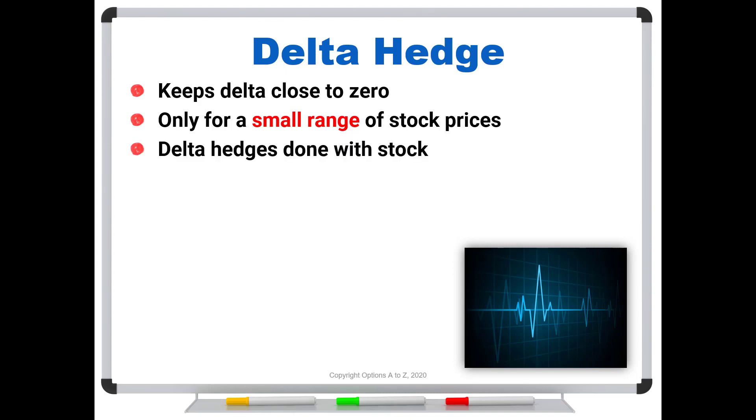Now your delta hedges are normally done with shares of stock. Why? Well, stock has delta one, gamma zero. So your delta hedges are relatively easy. All you have to do is offset the amount of deltas that you have in your position with shares of stock.